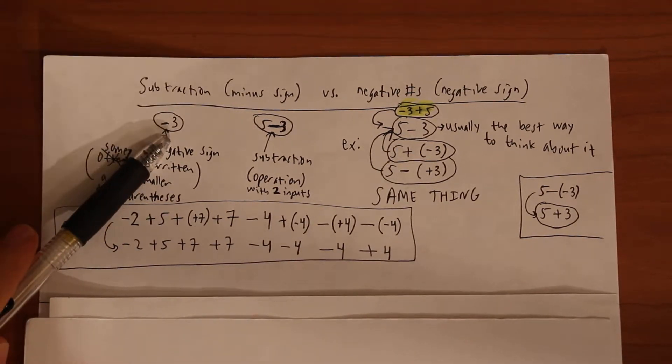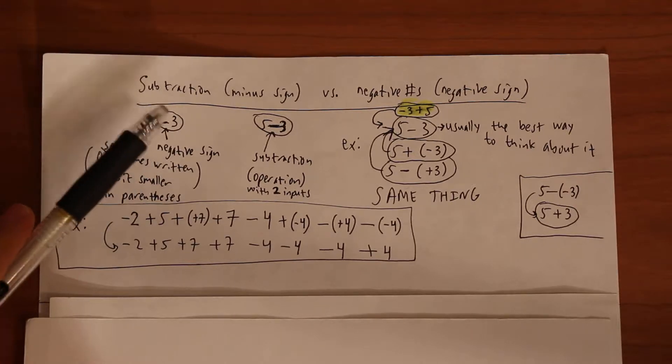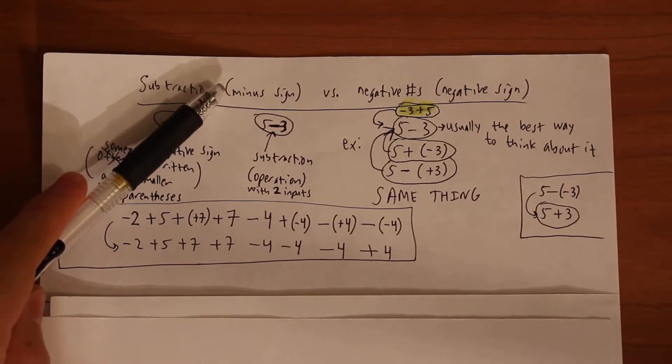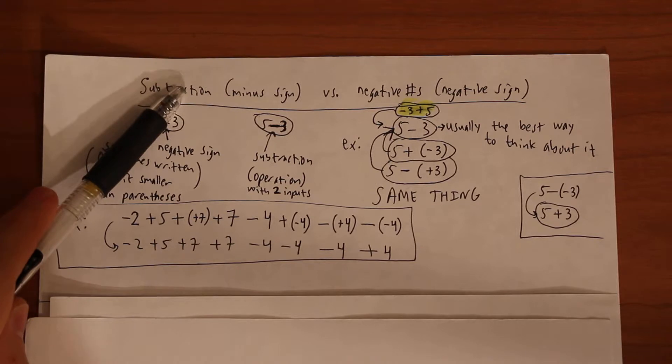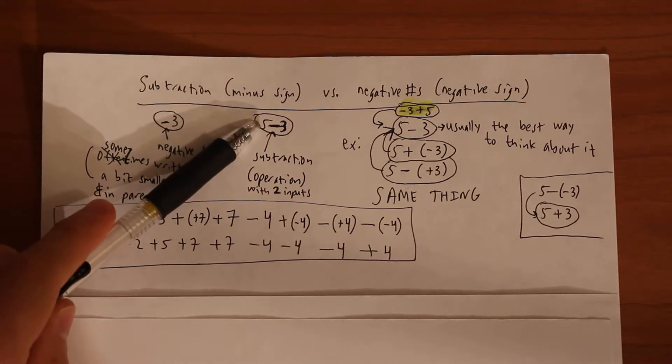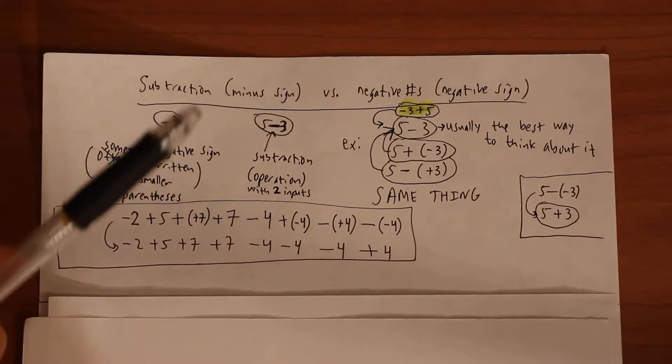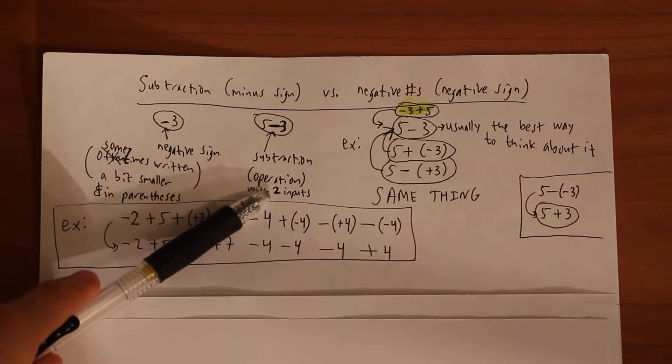So like negative three. A subtraction or minus sign, the main difference is subtraction just means there's two inputs - there's a left input and a right input. So that's it, it's an operation with two inputs.